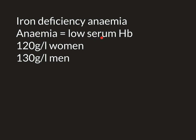Anaemia means too low a concentration of haemoglobin (Hb). When anaemia is due to iron deficiency, we call that iron deficiency anaemia. The threshold for anaemia differs slightly between men and women: in women, anaemia is when haemoglobin concentration is less than 120 grams per litre, whereas in men the threshold is higher — less than 130 grams per litre. So a level of 100 would be anaemic in both, but 125 would not be anaemic in a woman yet would be considered anaemic in a man.